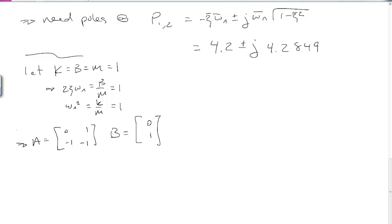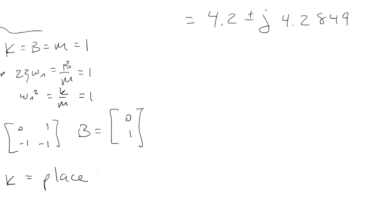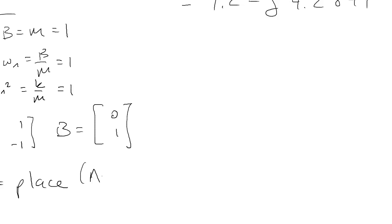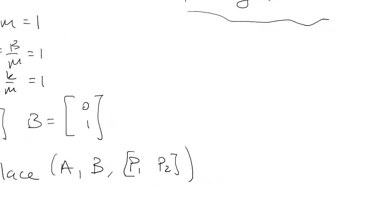We can use the place command in MATLAB and pass in the A and B matrix along with the desired poles. The commands we're going to run are k equals place(A, B, [p1, p2]), where p1 and p2 are given by this calculation. Let's switch over to MATLAB and see if we're going to meet our requirements with this design.